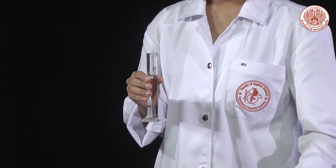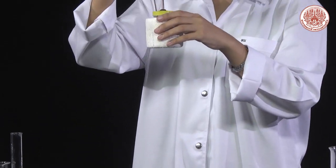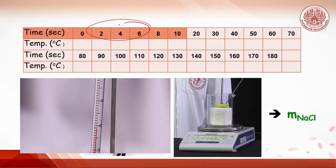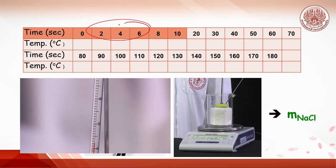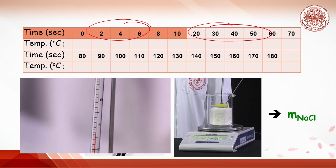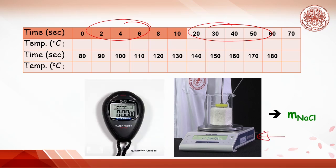Immediately pour the sodium hydroxide solution into the calorimeter. Stir and record the temperature every 2 seconds in the first 10 seconds, then every 10 seconds for 3 minutes or until a steady temperature is obtained. Record the weight of the calorimeter set containing the product — sodium chloride solution and water. After curve plotting, the temperature of mixing is obtained.